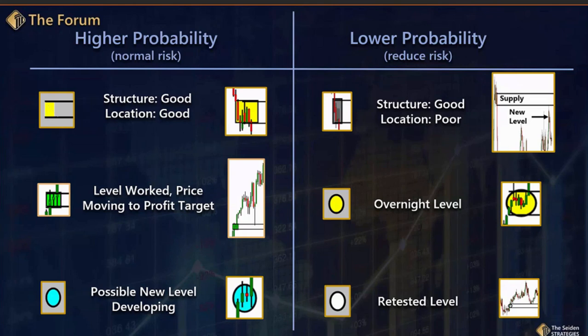We're going to look at the dollar in just a few minutes. The dollar has been key for us — it's one of our top key markets. Starting on the left, our yellow box means good structure and good location. When I say location, I'm talking about our supply and demand diagram — the pro space above and below, with all the novice space in the middle. You can always go watch the recording from the last session; FX Street puts those out there.